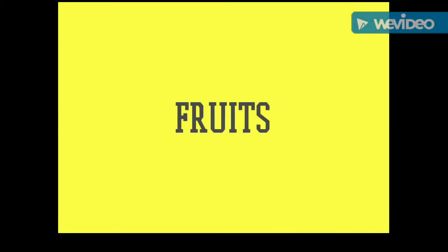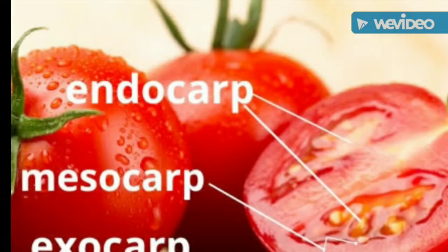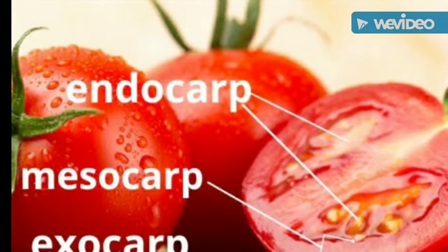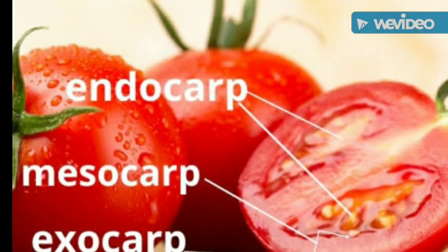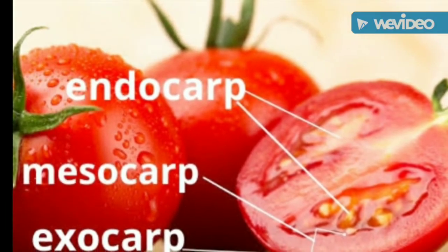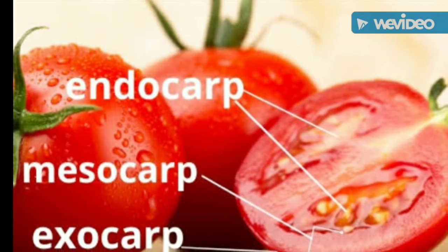Hi everybody. In the previous video we already discussed different types of fruits like true, false, and parthenocarpic. True fruits are further divided into simple, compound, and composite fruit.